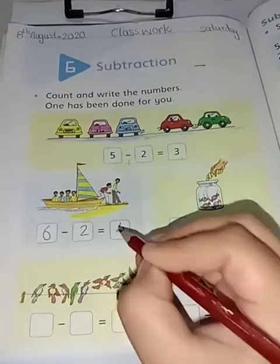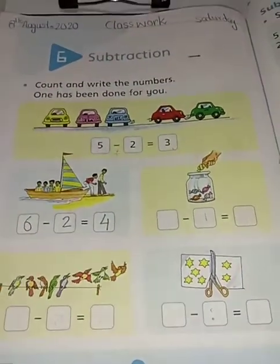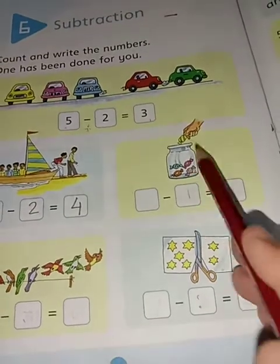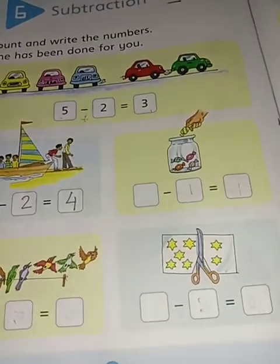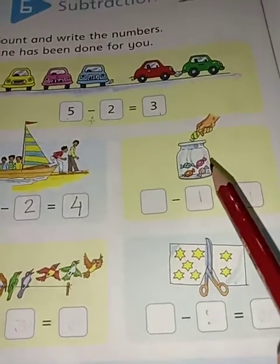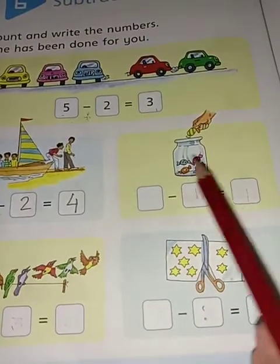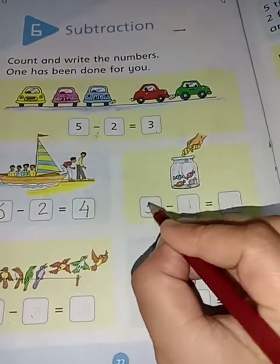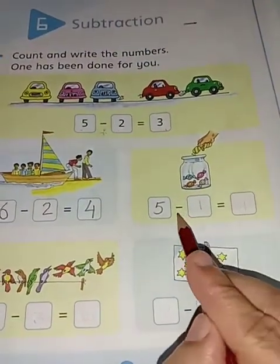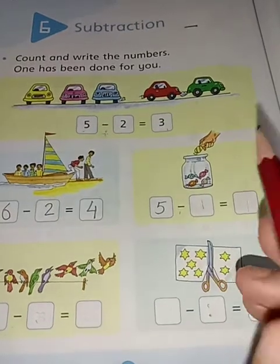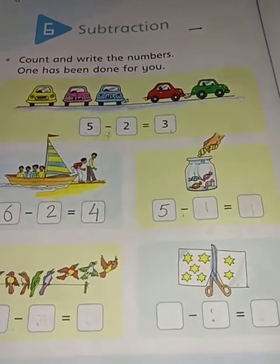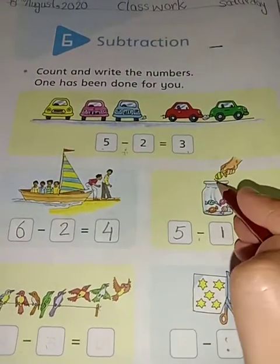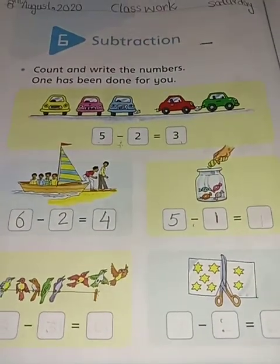Next, this is a jar with candies. How many candies are in the jar? Count it please. One, two, three, four, five - یہاں پہ ہم write کریں گے five. Sign of subtraction. One candy کسی نے اٹھا لی ہے - تو remaining کتنی candies ہوئیں؟ Count: one, two, three, four. The answer is four.